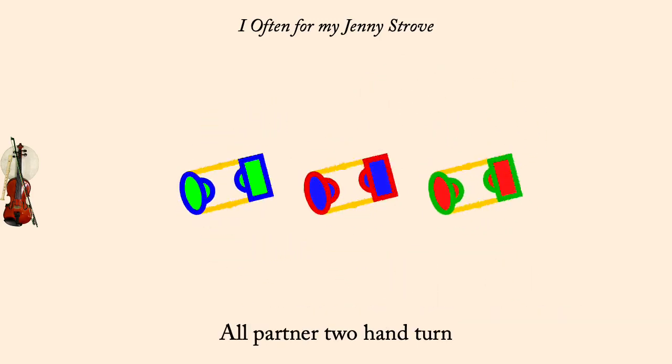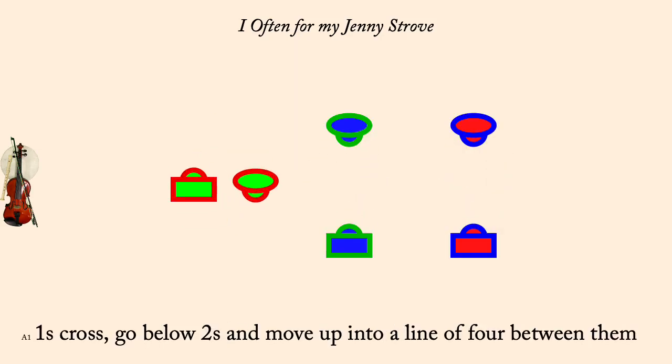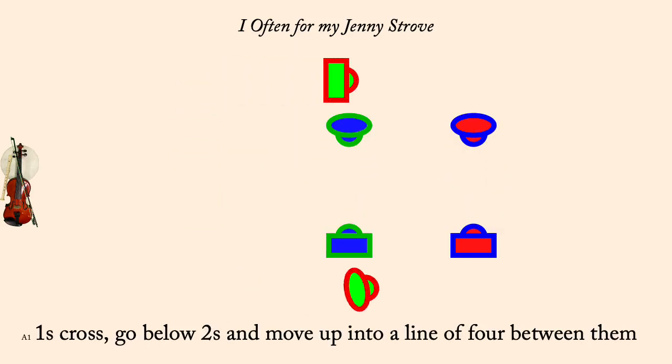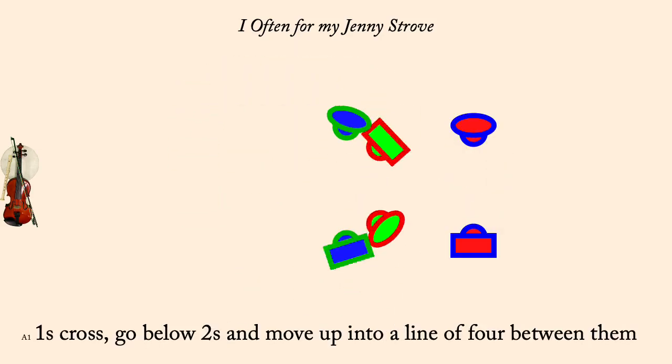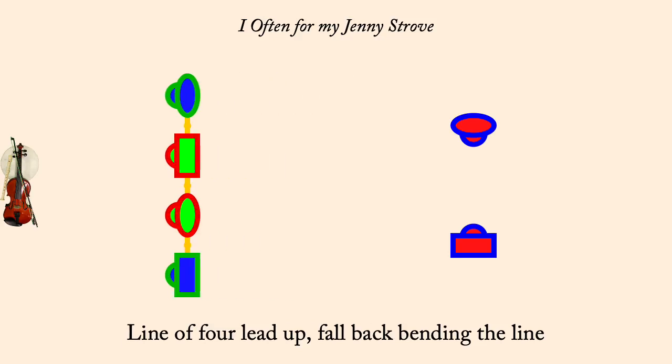Ones cross, go below twos, come up and form a line of four between them. Line of four, up a double, fall back, bending the line.